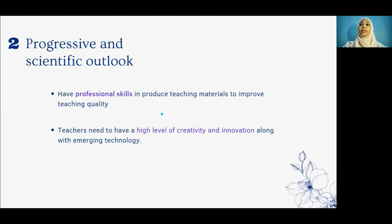The second element in the FPG is progressive and scientific outlook. A teacher must have professional skills in producing teaching materials to improve teaching quality. They also need to have a high level of creativity and innovation along with emerging technology. This element emphasizes evolving with the world, which now focuses on science and technology. Teachers must be skilled in preparing teaching materials that can attract interest and motivate students.